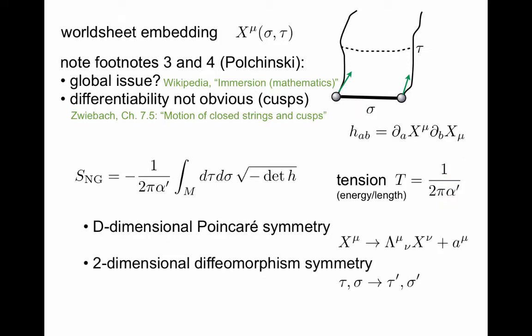So this action has d-dimensional Poincaré symmetry, the usual Lorentz transformation plus a possible shift. It's obvious, because the indices are contracted here. Right now we imagine that this moves in a flat background, but we will later generalize this to a curved background, as I was hinting at in the previous slide.